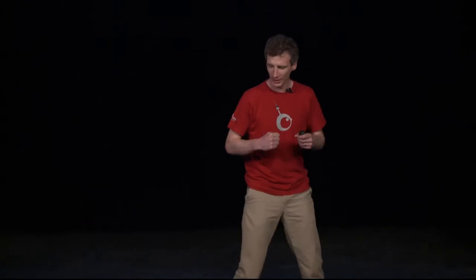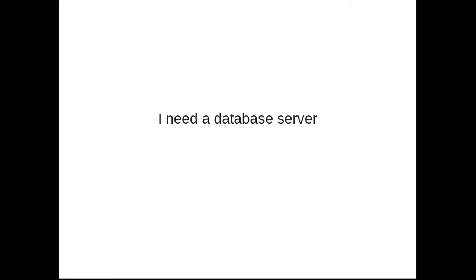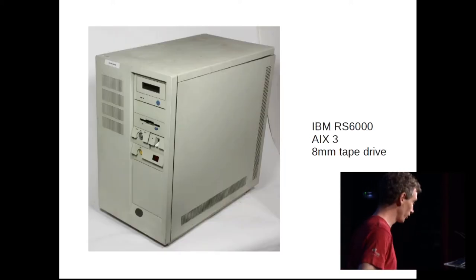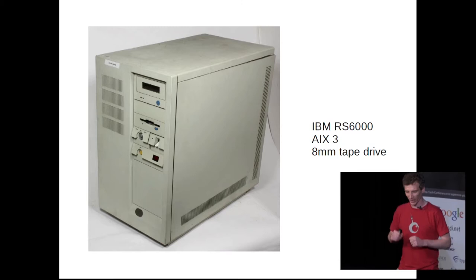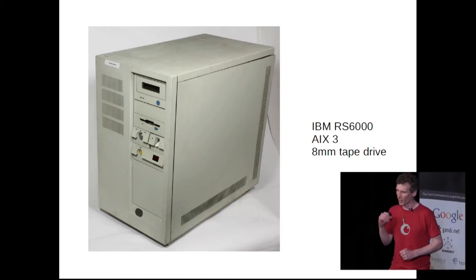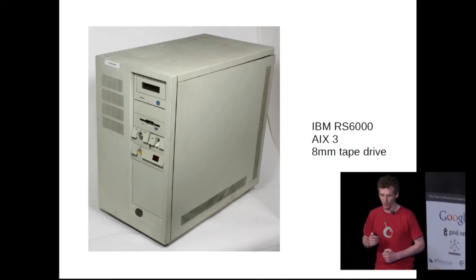So let's go back to 1990. The Berlin Wall has just fallen. East and West Germany have come together to win the World Cup. And the Ultimate Warrior beat Hulk Hogan in WrestleMania VI that year. A typical IT request: I need a database server to run our ERP. So here's what you want — an IBM RS6000 running AIX 3, with an 8mm tape drive and a top-of-the-line 100 megabyte hard drive.